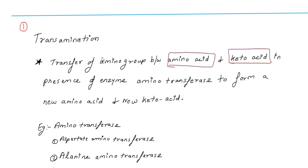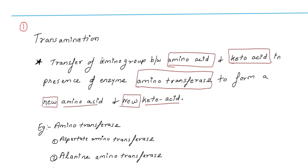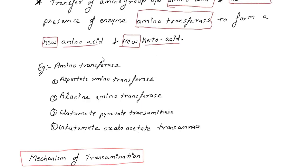The enzyme aminotransferase helps transfer the amino group. As a result, we get a new amino acid and a new keto acid. Examples of these enzymes include aspartate aminotransferase and alanine transaminase.